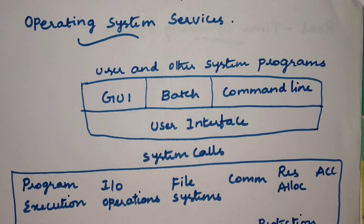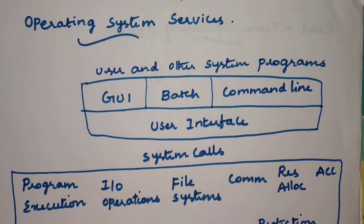Hello everyone. In this video we will discuss about operating system services — what are all these services that could be provided by the operating system, we will see one by one. Before going to the services, the main functionality that must be provided by the operating system: first, the operating system will provide the environment with which the programs are to be executed.